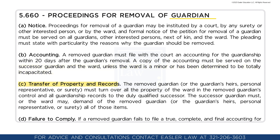Transfer of Property and Records: The removed guardian, or the guardian's heirs, personal representative, or surety, must turn over all the property of the ward under the removed guardian's control and all guardianship records to the duly qualified successor. A successor guardian must, or the ward may, demand of the removed guardian, or the guardian's heirs, personal representative, or surety, all of those items.